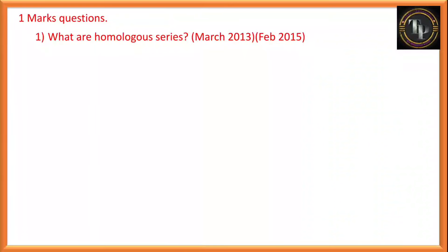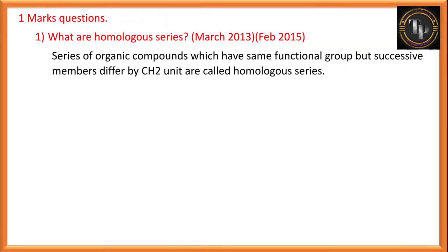One more question: What are homologous series? This was asked in March 2013, February 2015, in Belgium district annual examination paper. Series of organic compounds which have the same functional group but successive members differ by CH2 in it are called homologous series. That means two or more compounds having the same functional group but differing by one CH2 or two CH2 units are called homologous series.